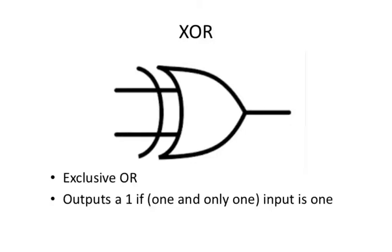The exclusive OR outputs a 1 if one and only one input is 1.